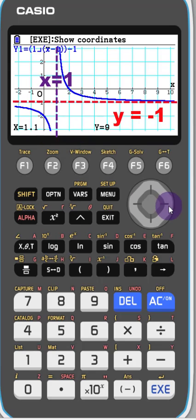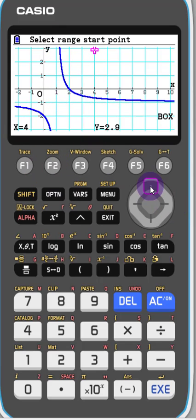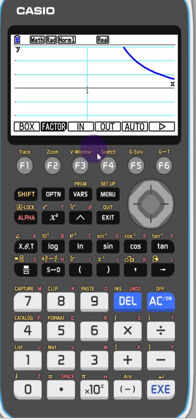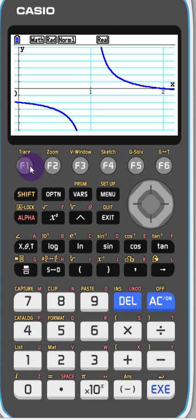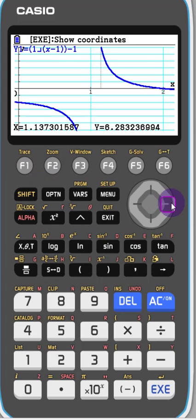Now we're going to use the box function just to zoom in on this just to show it a bit more clearly. And we can see if we do the trace we get the asymptote where it jumps at x equals 1.